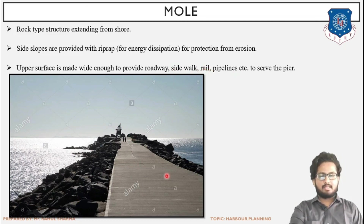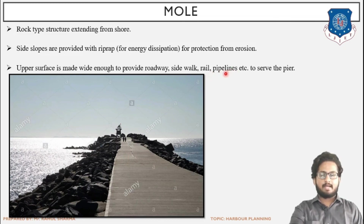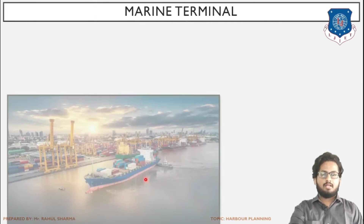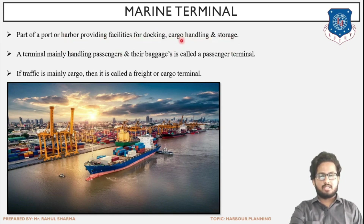Sometimes rails or pipelines can also be provided on a mole. In cases where the cargo being handled is more, railway or communication facilities can be provided. Depending upon the commodity being handled, pipelines might also be provided to serve the pier. Next is the marine terminal — part of a port or harbour providing facilities for docking, cargo handling, and storage. Basically, where accommodation is given and handling or storage of cargo is done. We discussed about the marine terminal in the first session of this chapter.